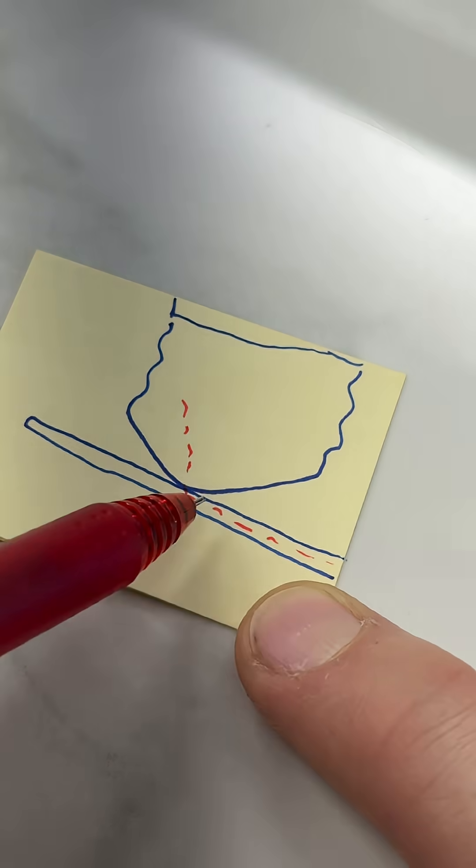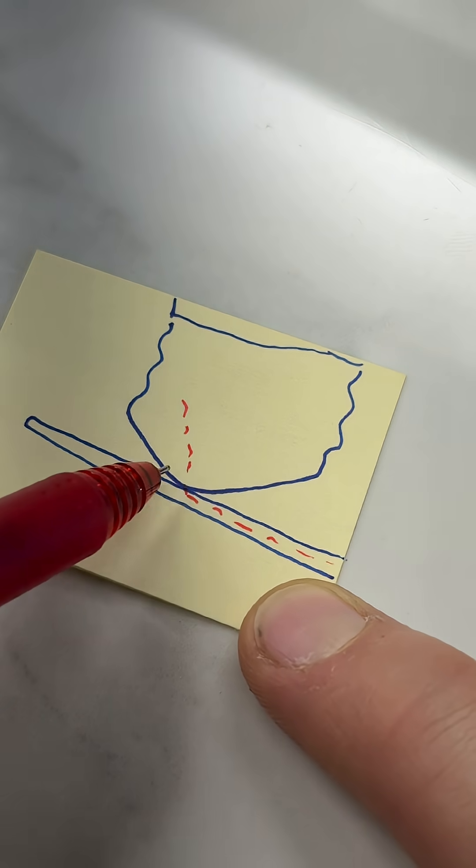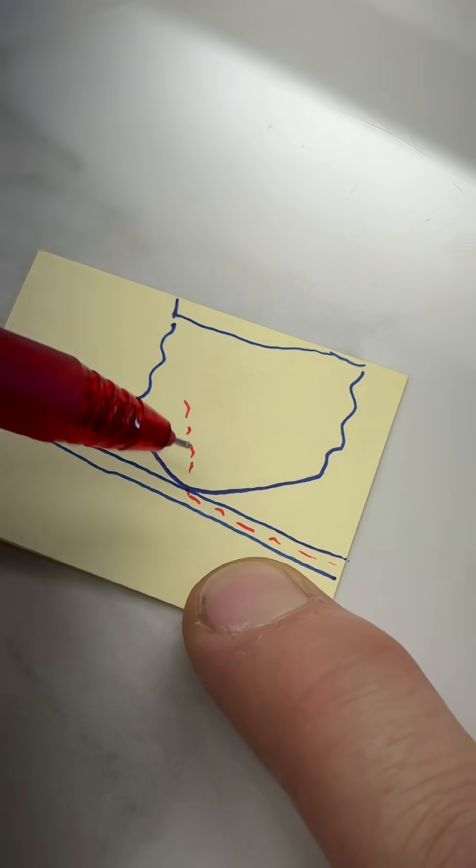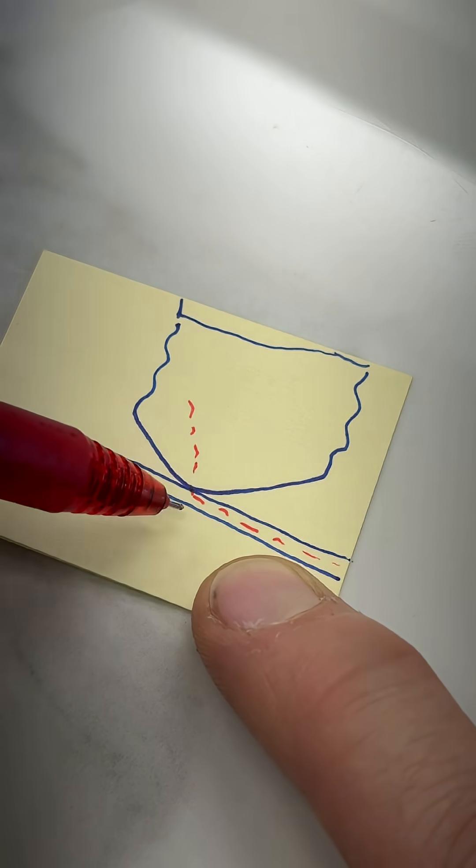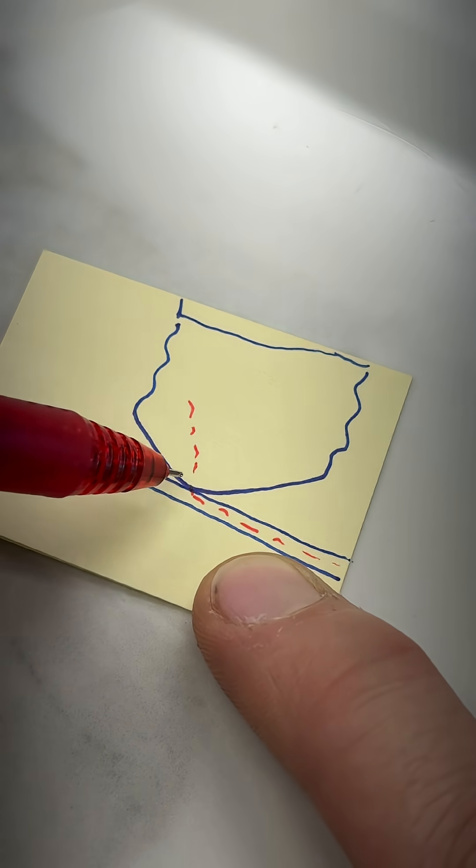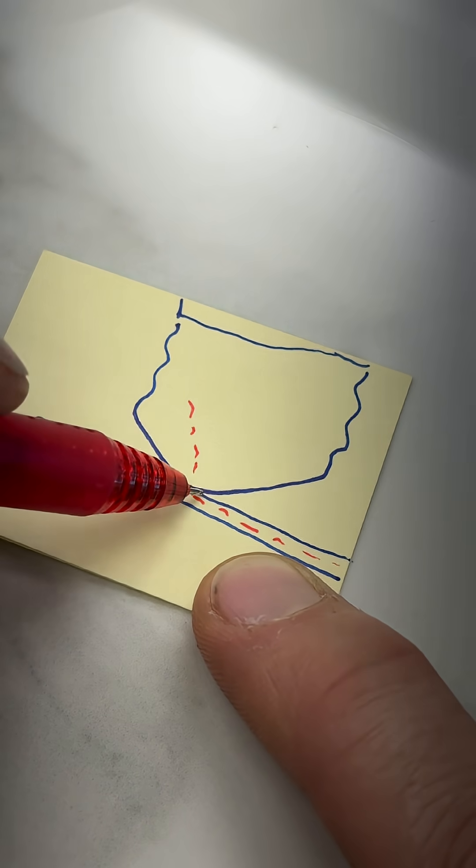You have this teeny tiny electrical contact interface where the current is trying to pass. Whenever you have current passing through these metals, it raises the chances of corrosion and oxidation right there because the energy is high.